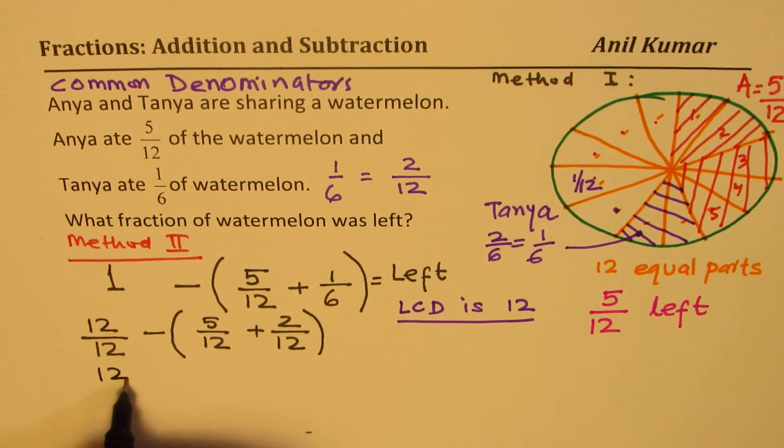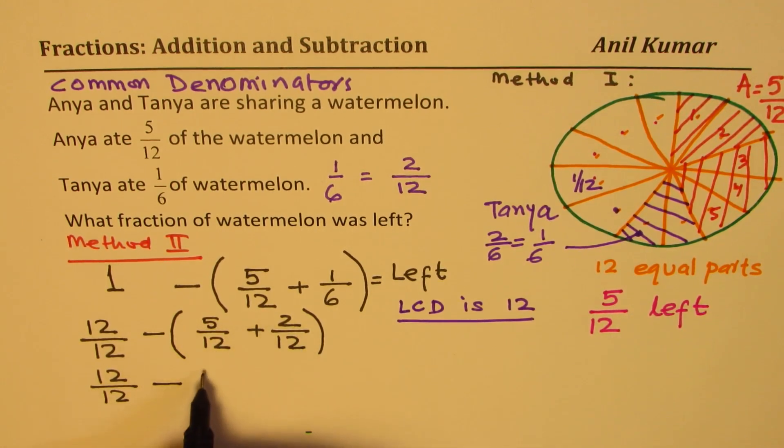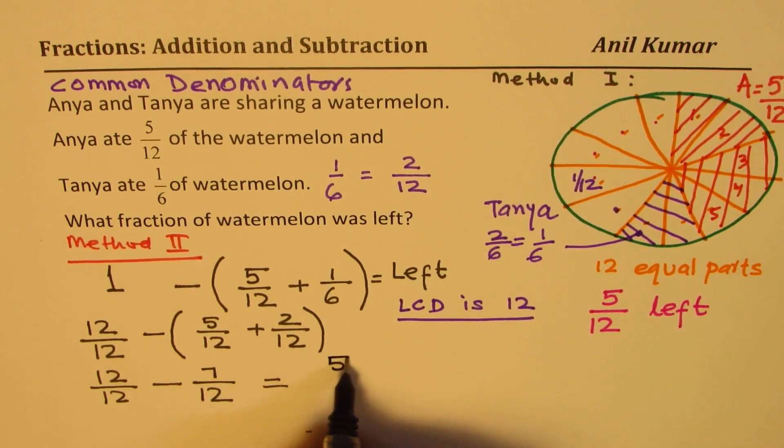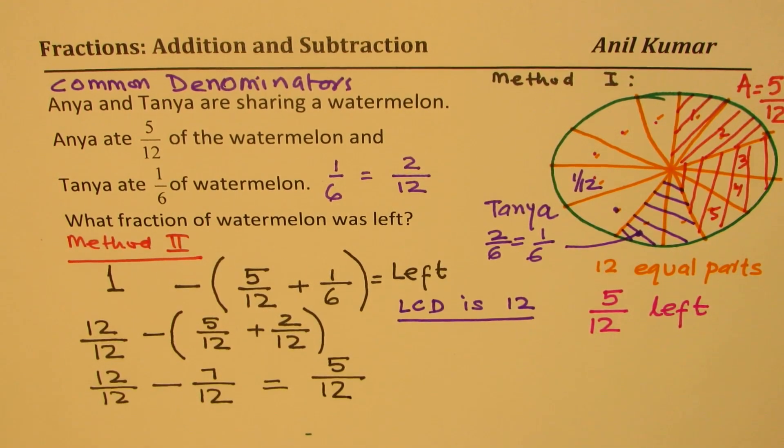So that means we have 12 out of 12 take away. When you add them, you get 7, 7 out of 12. Now you can take away from 12, 7. And what do you get? 5 out of 12. Do you see that part? So that becomes our answer.